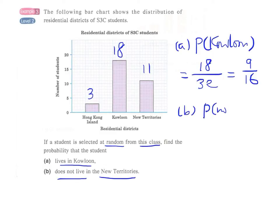So not live in NT. There are a total of 32 students, and 3 plus 18 students do not live in New Territories because they live in Hong Kong Island and the Kowloon Peninsula. So this will be 3 plus 18, we have 21 over 32.